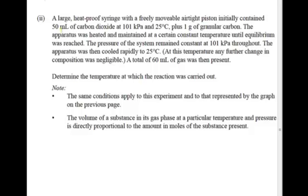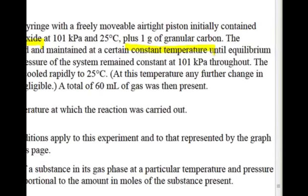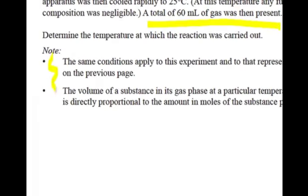In this question we've been asked to do some calculations and work out a temperature. We're told that we've got carbon dioxide, 50 mils of it, and some granular carbon. We change that to a set temperature, and when we're finished we find that 60 mils of gas is present. We're told it's similar to the reaction on the other page and given some other provisos to help us work this out.